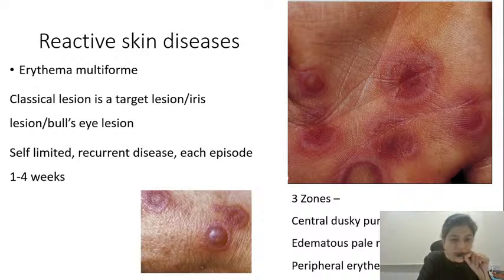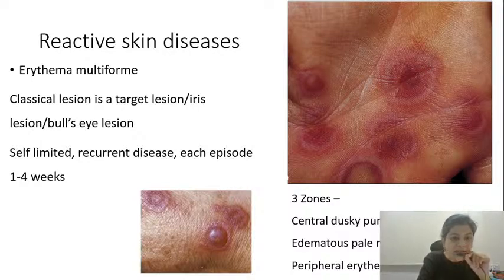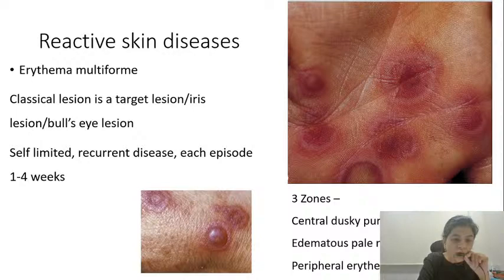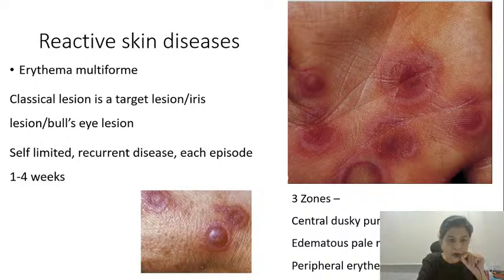What is the difference between Stevens-Johnson syndrome and toxic epidermal necrolysis? The difference is in the body surface area involvement. In cases of SJS, the body surface area involvement will be 10 to 30%, while in cases of toxic epidermal necrolysis, the body surface area will be more than 30%. In SJS, there will be at least two mucosae involved. In toxic epidermal necrolysis as well, you have mucosal involvement, and sometimes all the mucosae — including the oral cavity, genitalia, and the conjunctiva — can be involved.